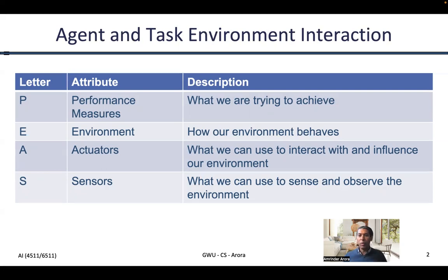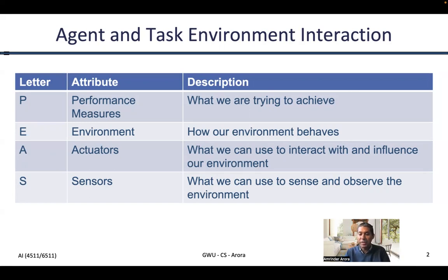Actuators is essentially what the agent has to interact with and influence the environment. For example, if it's a chess playing program, it might have a move API — so it makes a move, and this is how it interacts with the environment. If it's a car driving agent, then it might have at its disposal a brake pedal, an indicator, a wiper, the display, the gas pedal — all the ways in which the agent can interact with the environment, we refer to as actuators.